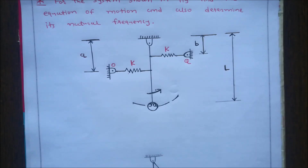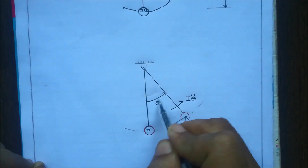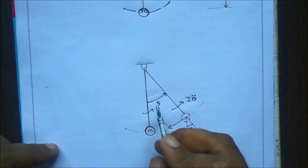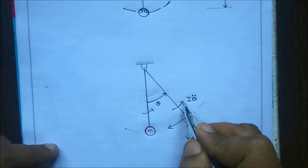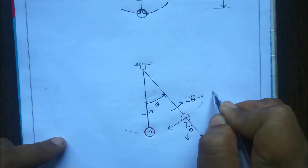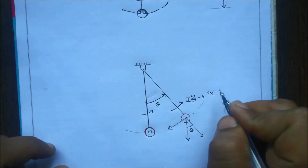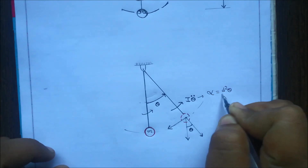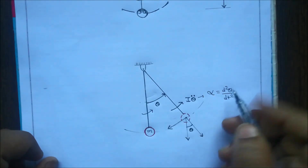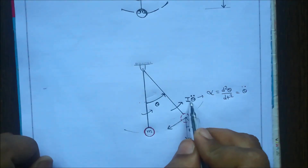In step one, we draw a free body diagram. Let the pendulum swing through an angle theta in the anti-clockwise direction. Applying the accelerating couple, that is I·θ̈, where θ̈ means angular acceleration — the double derivative of displacement, d²θ/dt². So the accelerating couple is I·θ̈.